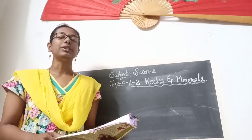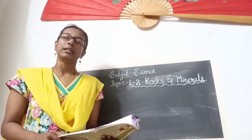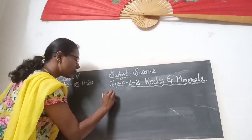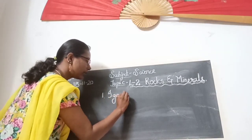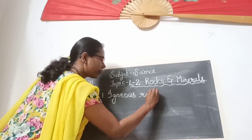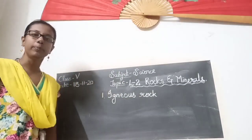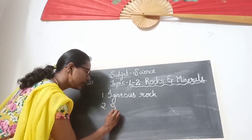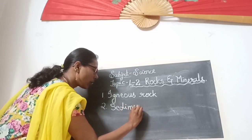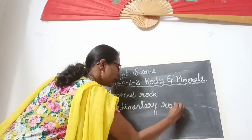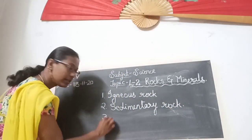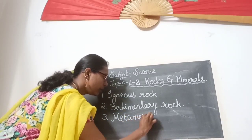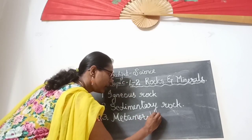Moving on to the different kinds of rocks — these rocks are classified into three types. The first one is igneous rock (I-G-N-E-O-U-S). The second one is sedimentary rock. And the third one is metamorphic rock.